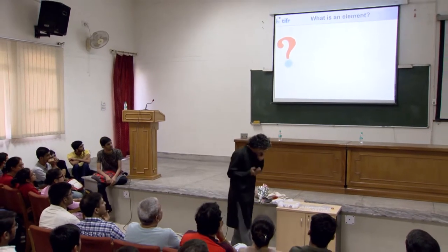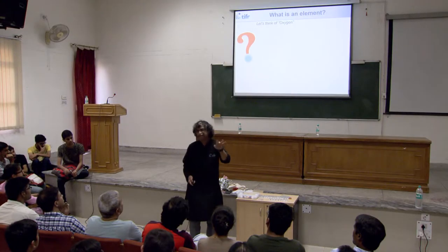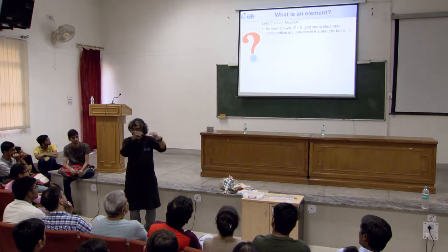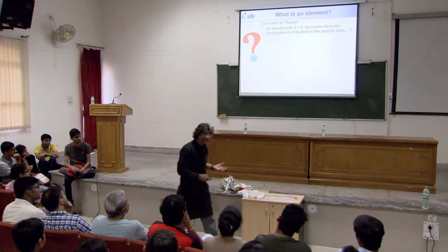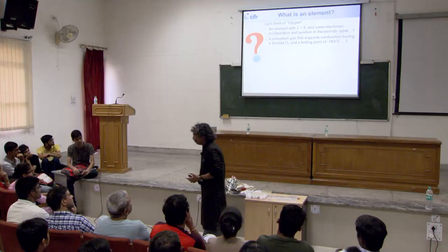Before we get any further, let's make sure we understand what is an element. What is an element? Well, let's look at oxygen. I can think of oxygen as something with atomic number 8 — hence 8 protons, 8 electrons, arranged as 1s², 2s², 2p⁴, at certain coordinates in the periodic table. I can also think of oxygen in a chemistry way: it's a gas, liquefies at minus 183°C, supports combustion. Both are right.